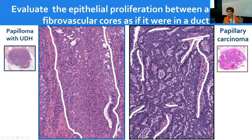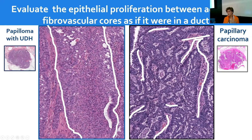In a carcinoma, the fibrovascular cores may not be so obvious—they can be very delicate and filiform—but I still draw imaginary lines and evaluate the space between adjacent fibrovascular cores. This proliferation, for example, is fairly monotonous, appears cribriform and punched out in some areas, qualifying as a carcinoma. If I had it in a duct it would be atypical, but given the extent, it's a carcinoma, and I classify it further as a papillary carcinoma. A simple but useful approach.